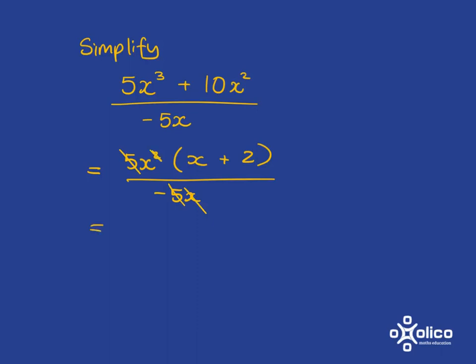So we will be left with x(x + 2), but it is over a negative. And so when we divide by a negative, it'll just be negative.